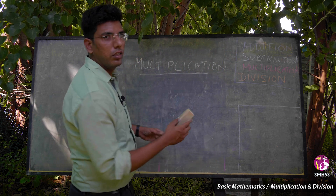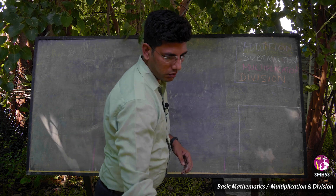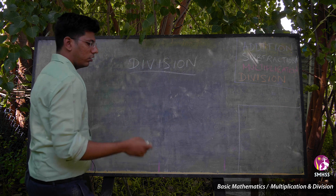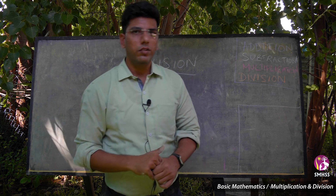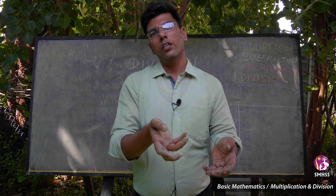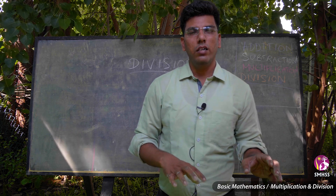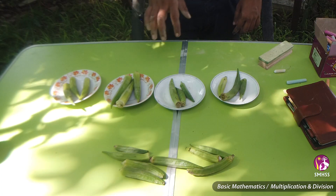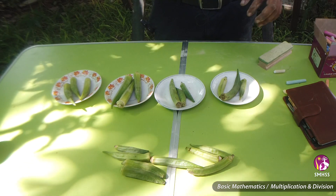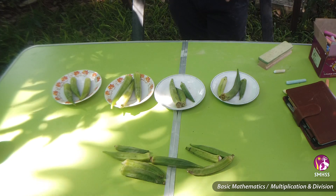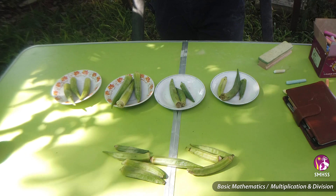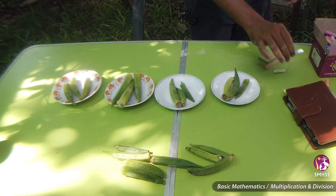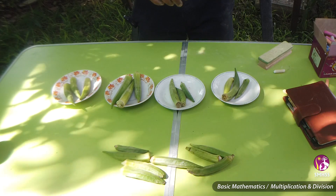Let us discuss about division. What is division? Division is an inverse — the opposite action to multiplication. We discussed that multiplication is repeated addition. Here is an example: you are going to the market and your mom told you to buy 9 ladies fingers. When you come to the market you see there are plates of 3 ladies fingers each. How many plates do you need to buy? You can count 1, 2, 3, 4, 5, 6, 7, 8, 9.